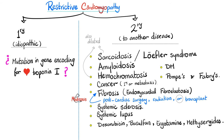What causes restrictive cardiomyopathy? It could be primary or secondary to something else. Primary means idiopathic — meaning unknown. When doctors do not know the answer, they say 'idiopathic,' which is a fancy way of saying they have no idea.